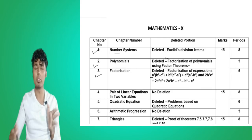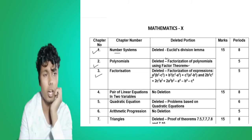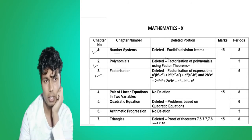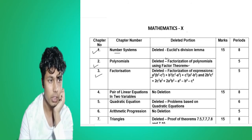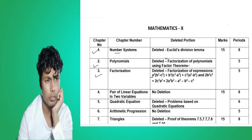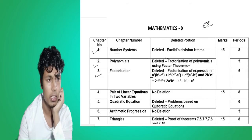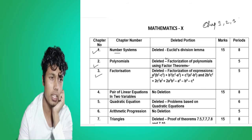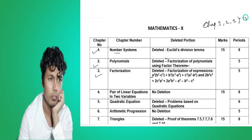After deleting the whole portion across these three chapters, all three chapters combined will comprise fifteen marks. So from chapter number one, two, and three, if you happen to study these three chapters properly, you will get fifteen marks from questions from here.